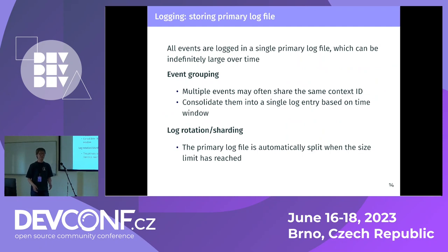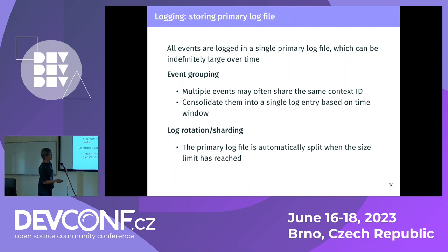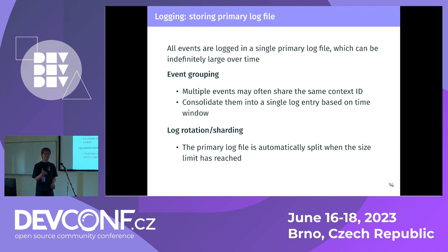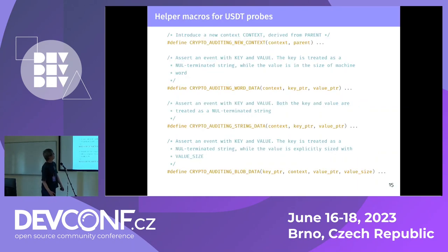As you can see, it's too verbose, so we implemented some optimizations. The 16-byte context ID is too much — it costs a lot of disk space. So we apply a grouping mechanism that makes multiple events into a single event entry, which will make it much smaller. We also implemented a log rotation mechanism so that if the primary log file reaches the limit, the system automatically creates a backup file and opens a new file.